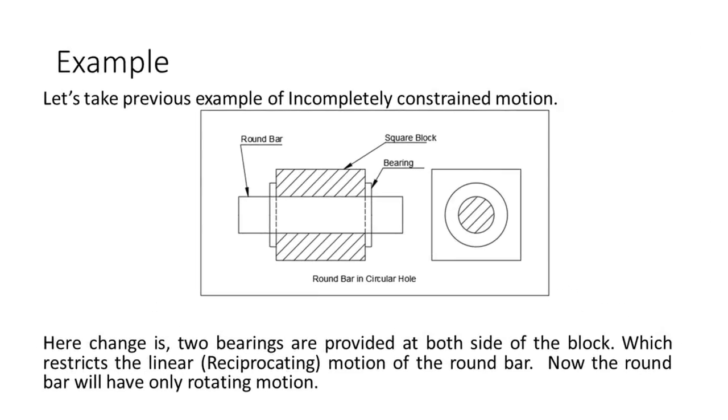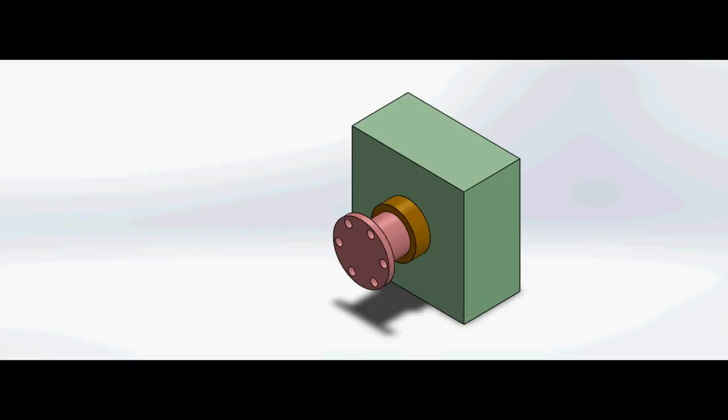To understand more clearly let's take the same example as in the previous incompletely constrained type. The only change is that two bearings at both ends of the block are provided to restrict linear motion of the rod. Because of these bearings, the rod is restricted from linear motion and only allowed to rotate.